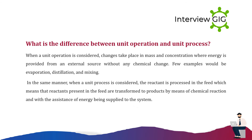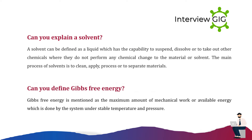What is the difference between unit operation and unit process? In a unit operation, changes take place in mass and concentration where energy is provided from an external source without any chemical change — examples include evaporation, distillation, and mixing. In a unit process, the reactants present in the feed are transformed into products by means of chemical reaction with the assistance of energy supplied to the system.